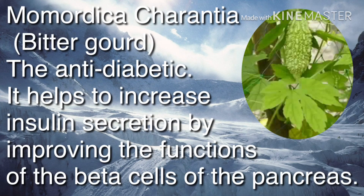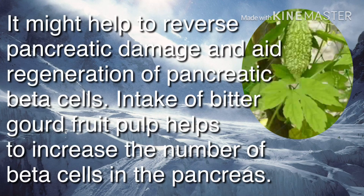Bitter gourd is anti-diabetic. It helps increase insulin secretion by improving the function of the beta cells of the pancreas. It might help reverse pancreatic damage and aid regeneration of pancreatic beta cells. Intake of bitter gourd fruit pulp helps to increase the number of beta cells in the pancreas.